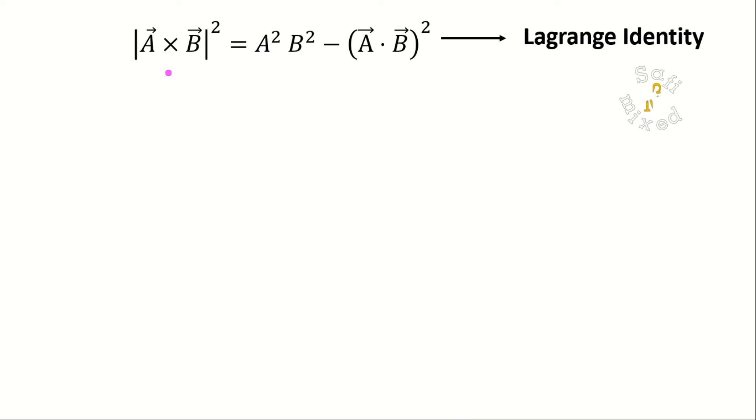Or it relates the modulus square of two vectors of vector space with the product of the square of their magnitudes and the square of their scalar product, like you see over here.